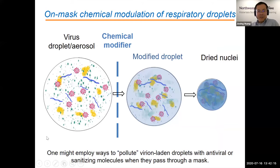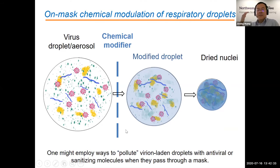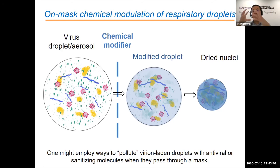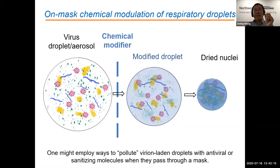Imagine a respiratory droplet with virus particles in it — the red particles. If we force them to pass through a chemical screening layer — a chemical modifier layer loaded with antiviral compounds — then some of these compounds will dissolve into the droplets as they are released during exhalation. We may not block all the droplets, but we contaminate them as many as possible. When they dry up, there is a cubic relationship between diameter and volume, so whatever antiviral chemicals you dope into the droplets will get concentrated by a factor of the third power very rapidly. This might be a way to introduce very little antiviral chemicals that can drastically help deactivate the virus.